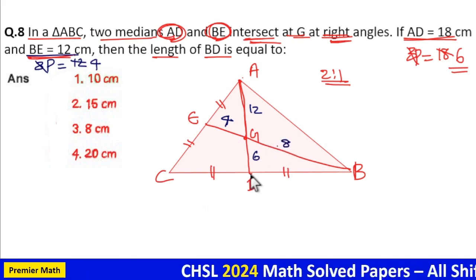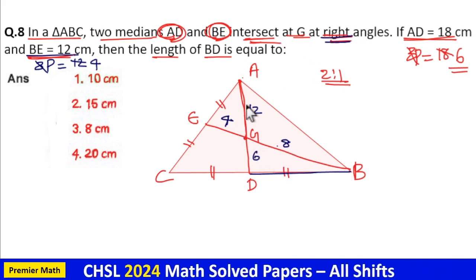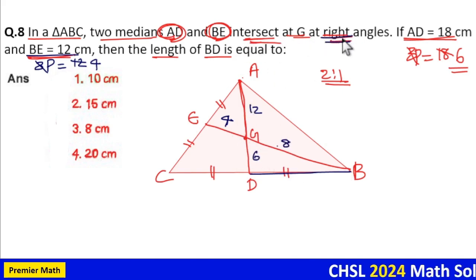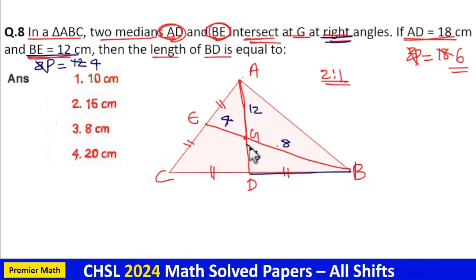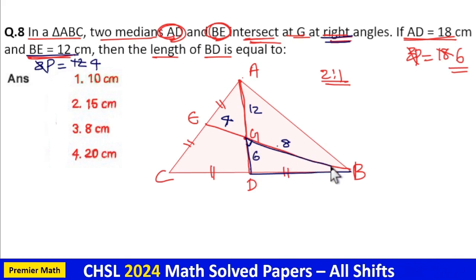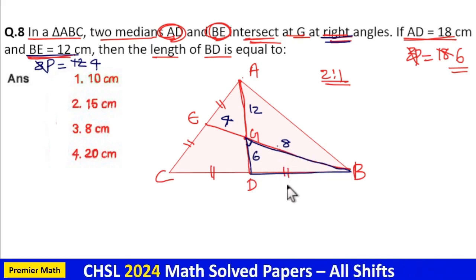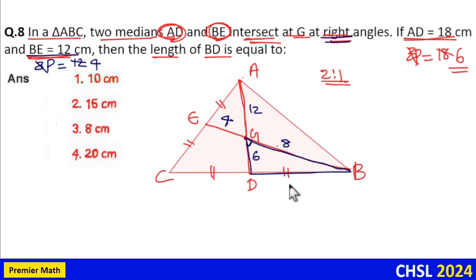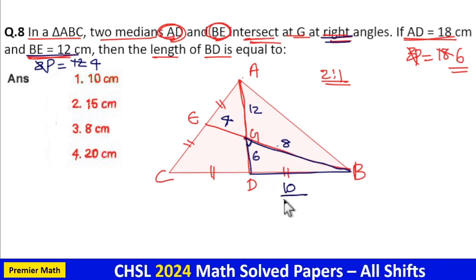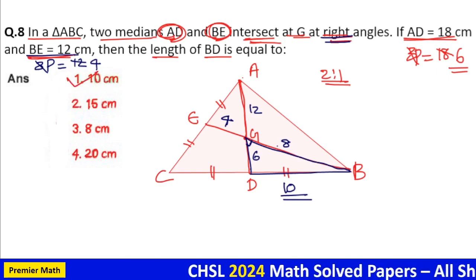We need to find the length of BD here. The question says these two medians bisect at right angles. So this angle is 90 degrees, which means this is a right angle triangle. In that case, one is 6, other is 8. Then the third side must be 10 cm. So option 1 is your answer.